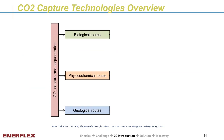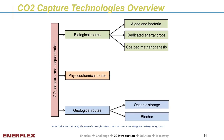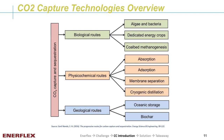Now that we know where CO2 comes from, how are we going to handle it? Primarily, we have three routes: biological routes, physical-chemical routes, and geological routes. From biological routes, we can feed CO2 to algae and bacteria, grow dedicated energy crops, or inject CO2 into coal beds to produce methane through methanogenesis. We may also use geological routes such as sending CO2 to the ocean for storage. Regarding carbon capture, we currently use physical-chemical routes — primarily absorption, adsorption, membrane separation, and cryogenic distillation technology.